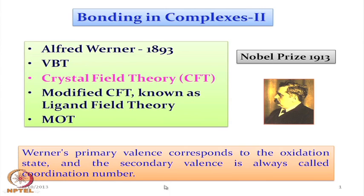Whenever we talk about the valence bond theory, we should have a good idea about the valence structure of the species. The primary valence basically corresponds to the oxidation state — it is nothing with relation to the corresponding coordinate bond. It is simply like the presence of three chloride ions around an aluminum center in aluminum chloride, or two chloride ions around barium in barium chloride. But the most important and most interesting thing is this secondary valence.